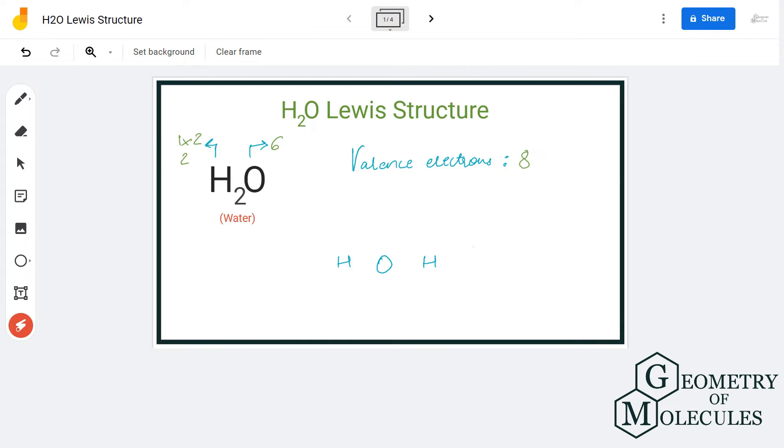Now that we know the total number of valence electrons for this molecule, we will place the atoms and its individual valence electrons. As you can see, there are two hydrogen atoms and one oxygen atom. The oxygen atom will take the central position because hydrogen atoms cannot take the central position, so oxygen will be in the center and two hydrogen atoms will be on the outside.